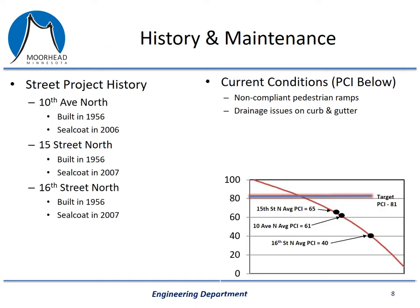The history on these streets is fairly straightforward. 10th Avenue North, 15th Street North, and 16th Street North were all constructed in 1956. There was a seal coat on these streets in 2006 and then 2007. Outside of that, there hasn't been any major maintenance items or repairs. The street department may have done some minor maintenance like a chip seal, but there hasn't been anything major in a significant amount of time. If you look at the PCIs shown on the graph, 15th Street North has a PCI of 65, 10th Avenue North has a PCI of 61, and 16th Street North has a PCI of 40. We also have non-compliant curb ramps in this area, which we are required by law to update when we come in to do a project such as this. There are also some drainage issues on the curb and gutter, so we will be replacing that curb and gutter and making sure that we don't have water pooling.